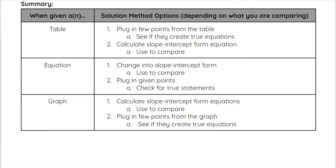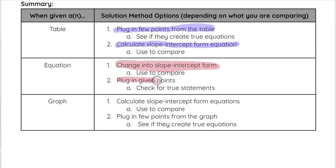In summary: when we have a table, we might plug in points to see if they create true equations, or calculate the slope-intercept form and compare. For an equation, we can convert it to slope-intercept form or plug in given points. For a graph, we can calculate slope-intercept form or plug in points from the graph. There's no single right method — use whichever you're most comfortable with to save the most time on these types of problems.